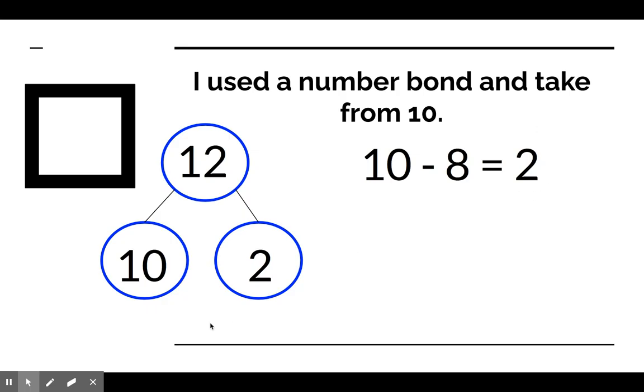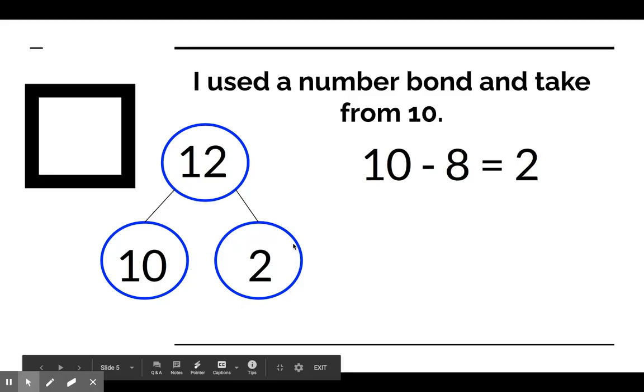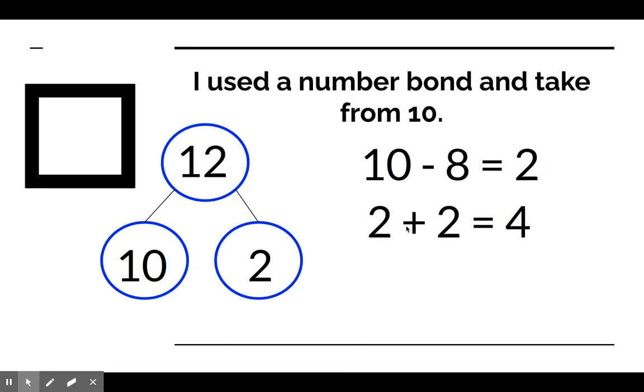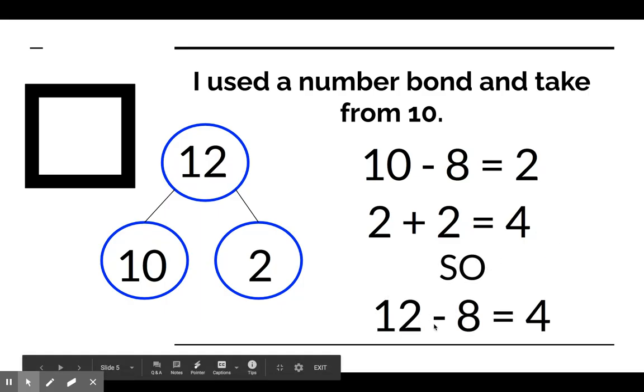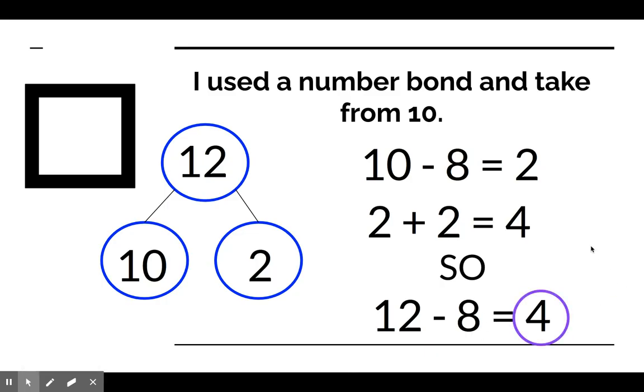But, we can't stop there because remember, we still have this other part of 12. So, now we have to say, well, he had 2, was the difference of 10 subtract 8, and 2 more over here is the other part, together equals 4. So, 12 subtract 8 equals 4. That means that Jacob has 4 bouncy balls left after he gave 8 to Pete.